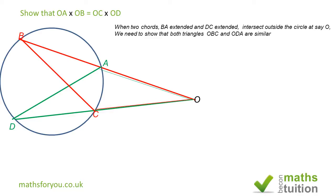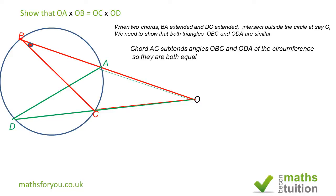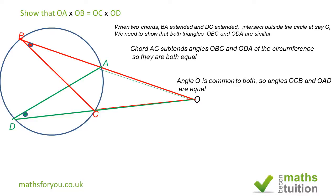The arc AC subtends B at the circumference, and the same arc AC subtends D at the circumference. Both B and D are in the same segment, so those angles are equal. The two triangles also have the angle at O in common, which means that angle A and angle C are equal. Therefore triangles OBC and ODA are similar.